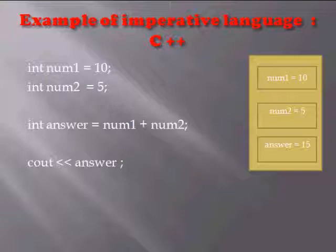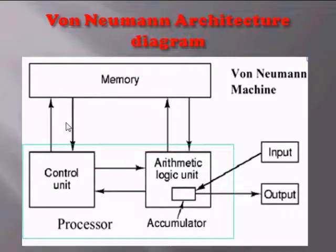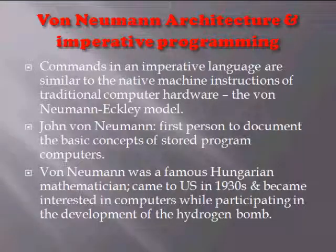The functional paradigm was brought about to reduce the transfer time of this calculation. The following von Neumann architecture diagram shows us the transfer between the RAM and the CPU. This time-consuming transfer was documented by a person called John von Neumann, who was the first person to document the basic concept of stored program computers.